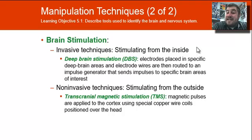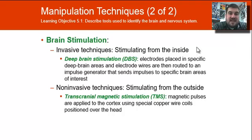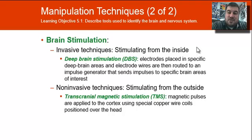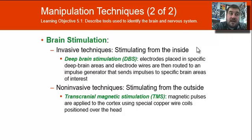There are invasive and non-invasive brain stimulation techniques. With deep brain stimulation, we take electrodes and place them in specific deep brain areas, and electrode wires are routed to an impulse generator which sends impulses to the specific brain areas of interest. That's how we can tell which parts of the brain do which, and we can make the brain feel certain things, hear and see certain things.